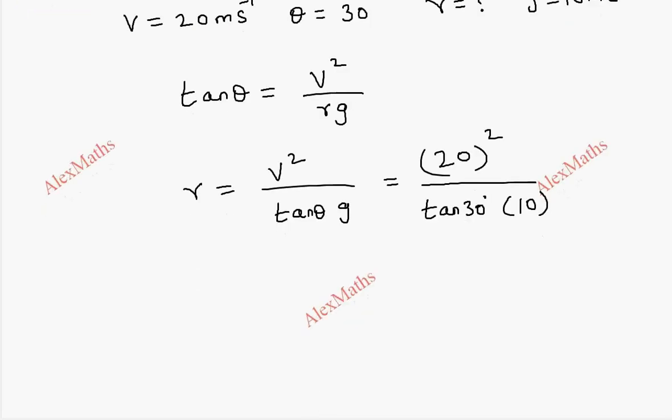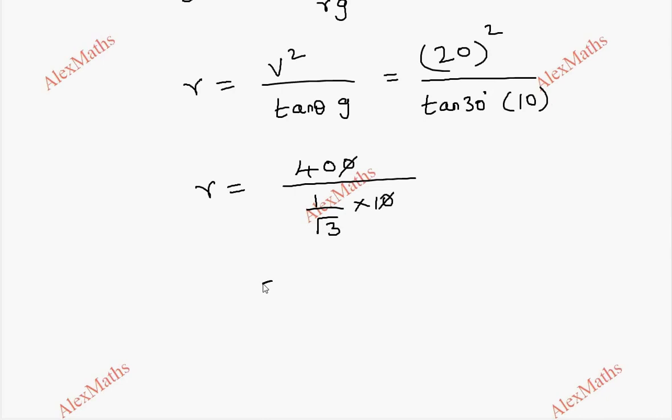With further simplification, r equals 20 into 20, 400. This is 1 by root 3 into 10. This cancels, and root 3 is in the denominator, r equals 40 by root 3.